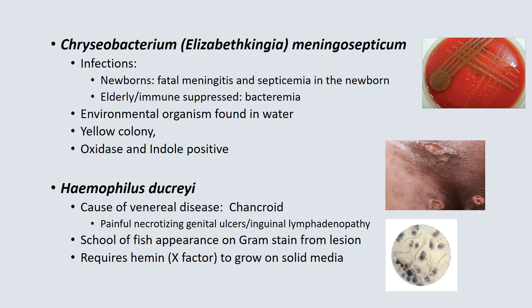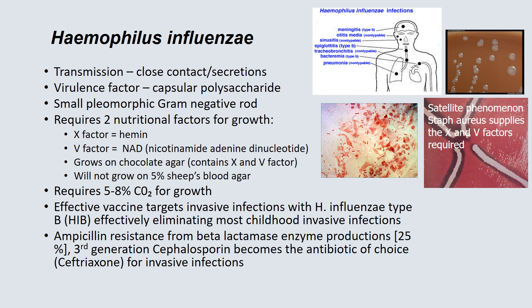Haemophilus ducreyi is the cause of the venereal disease called chancroid. It causes painful, necrotizing genital ulcers and inguinal lymphadenopathy. If you do a gram stain from these lesions, you would see what is called a school of fish appearance. This organism can be very difficult to grow and requires hemin in the media used for growth on solid media.